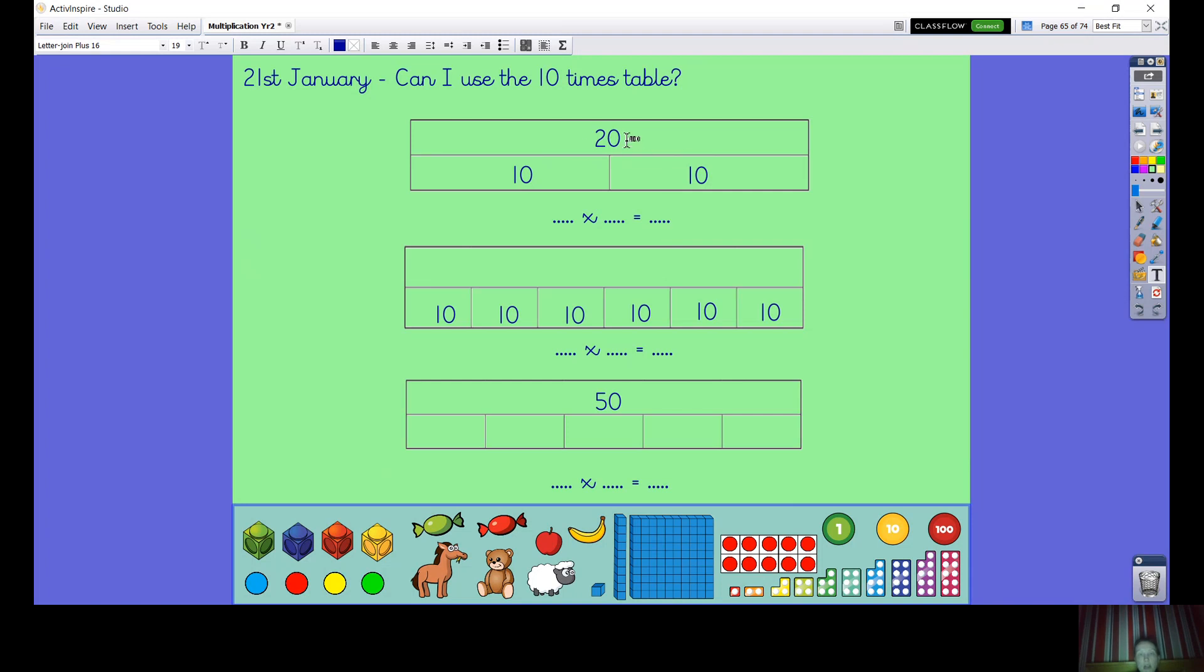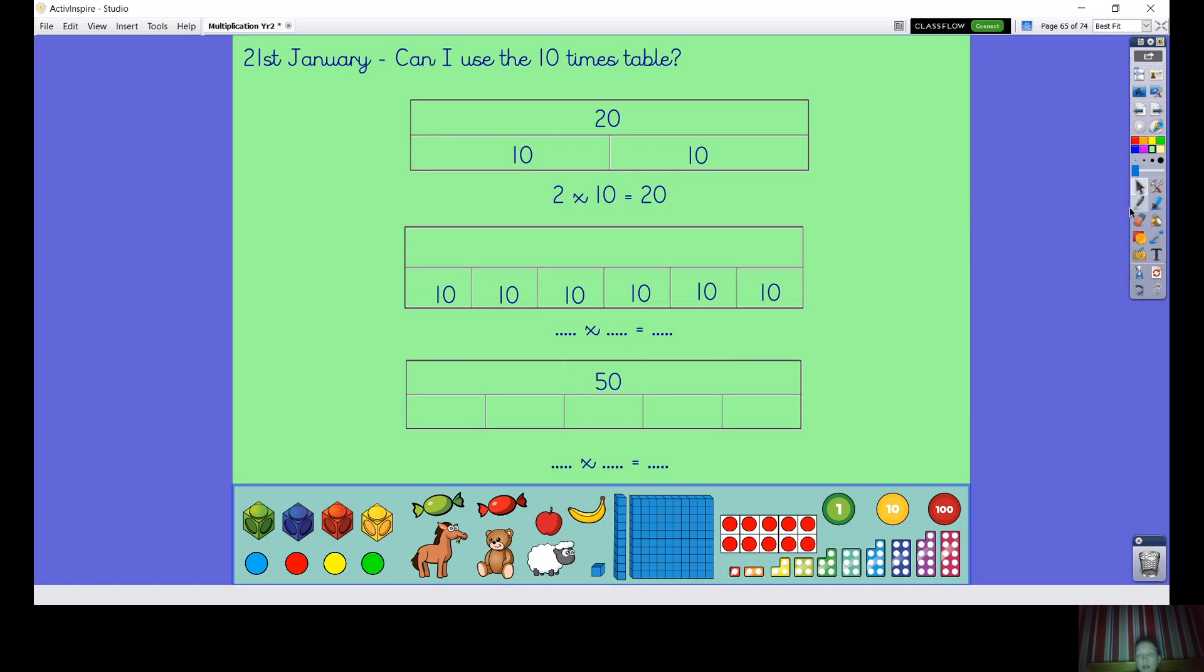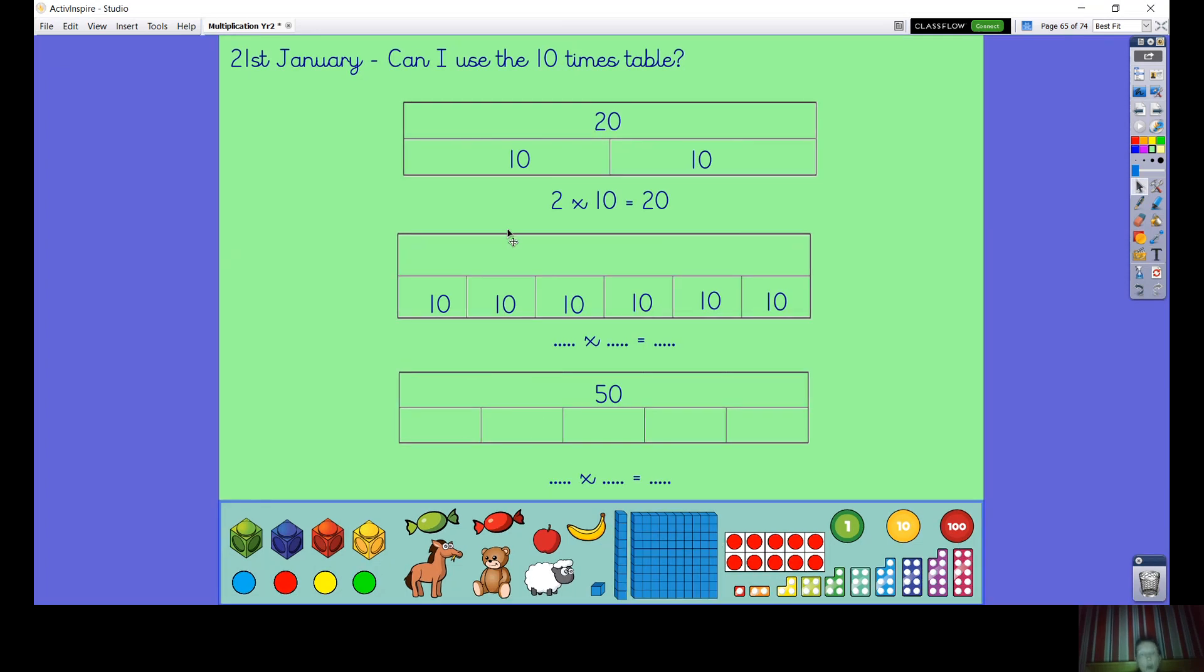Let's see how we can link the 10 times table to the bar model and our multiplication sentences. So here we know it's 20 is our answer. We've got one group of 10, two groups of 10. So this one is 2 times 10 is 20. Have a look at the other ones and see if you can work out what the missing numbers are and what the multiplication would be.